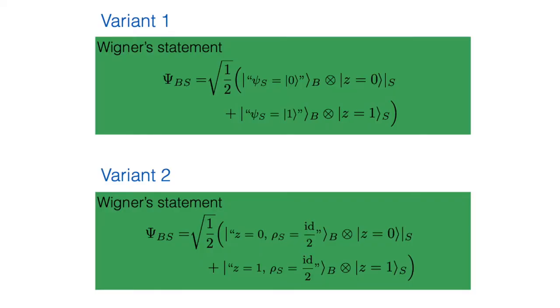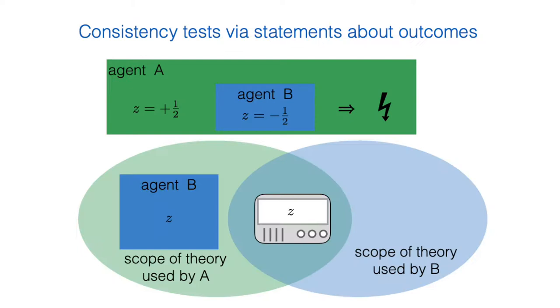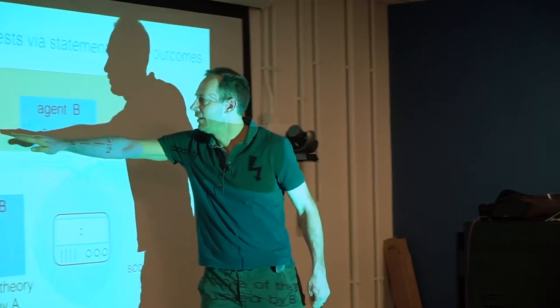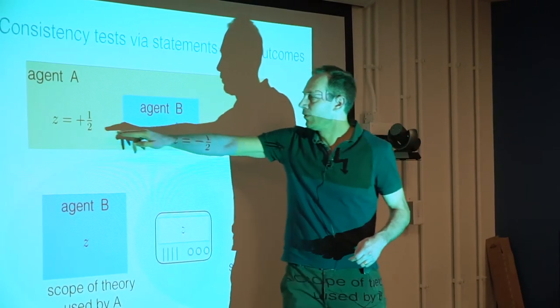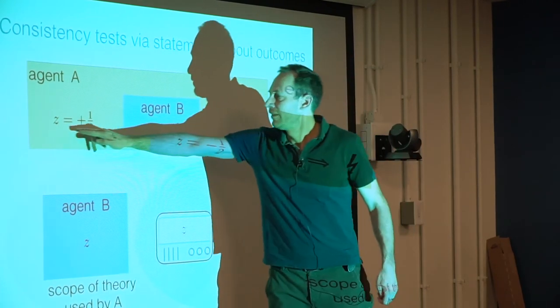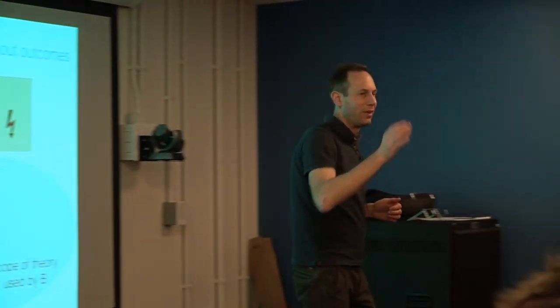The point is that we have to be very precise about what that means. For the consistency check, I would always say we are only at the end comparing outcomes. Whenever agent A talks about B, he may in the simulation of B need to reason about the state assigned to B, but at the end we would not call it a contradiction if this is not a statement about an outcome. Quantum states are probably not the things we want to agree on because they are anyway subjective — so we focus on outcomes.